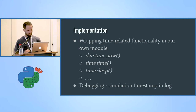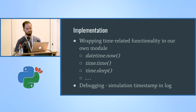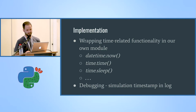A few details about our implementation. Since we use the same code in production and simulation, we can't use default time-related functionality like time.time or time.sleep. We wrapped all of them in our own module and the entire system calls this module — it's the only place where code is aware whether it's running in simulation or production. We also added the simulation timestamp to the logs, because in simulation that's the time we care about when investigating logs.